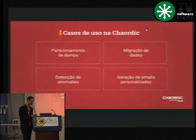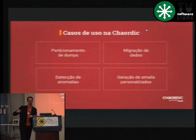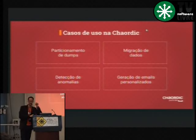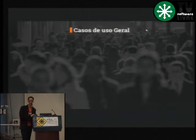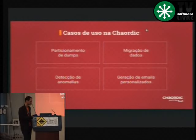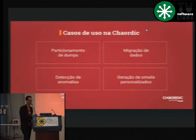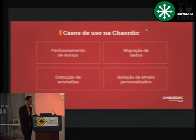Quando a gente detecta uma anomalia, reporta em uma ferramenta. E por fim, se você ia fazer uma compra, adicionou um elemento no carrinho e depois desistiu, provavelmente em algum momento você vai receber um e-mail dizendo 'você esqueceu de finalizar aquela compra' — a gente que envia esse e-mail para capturar esse potencial cliente. Esse disparo de e-mail é feito justamente utilizando a infraestrutura do Spark. A gente está trabalhando para abrir o código da detecção de anomalias e da migração de dados.